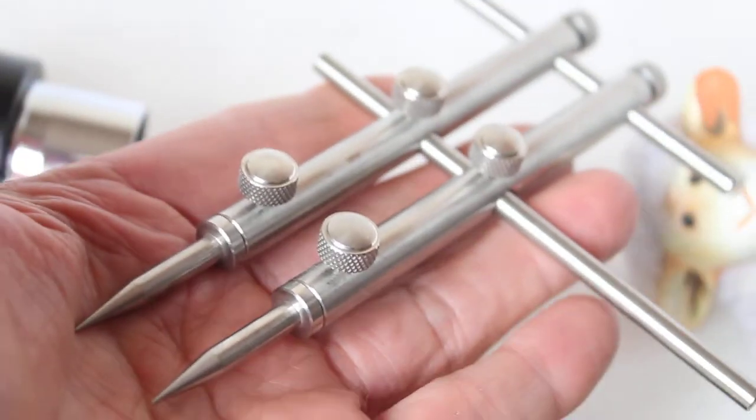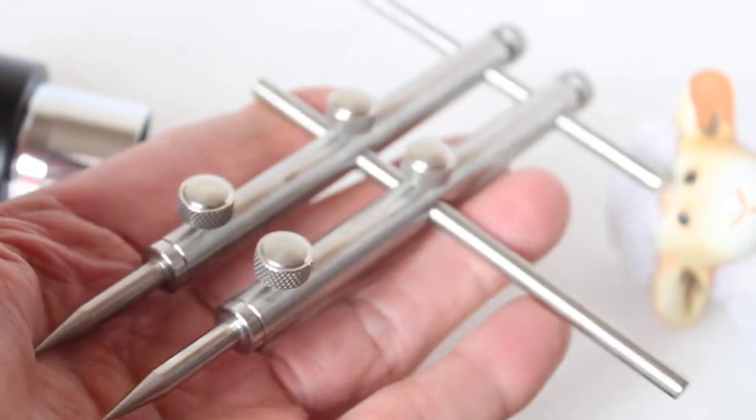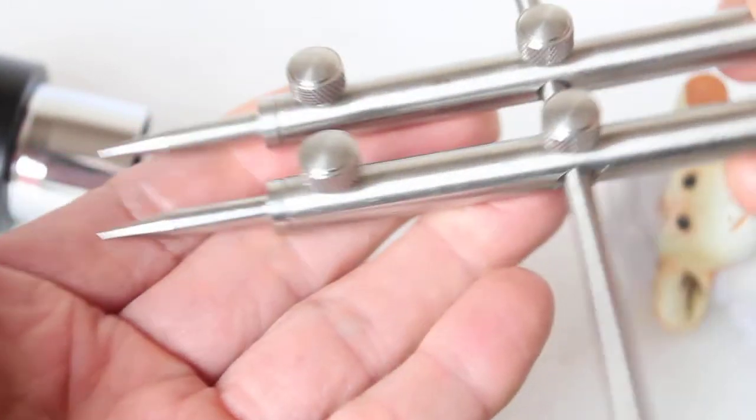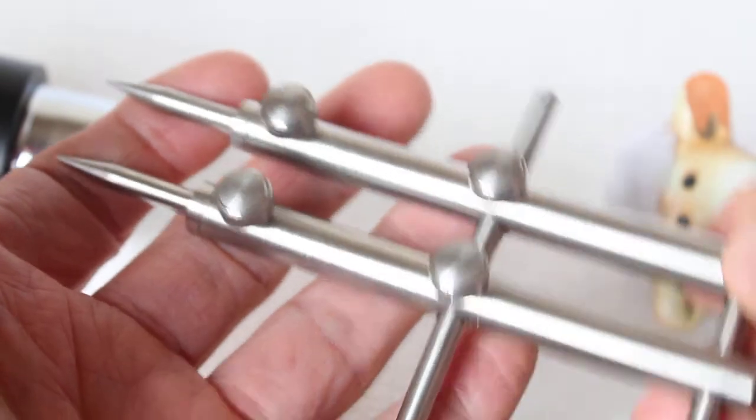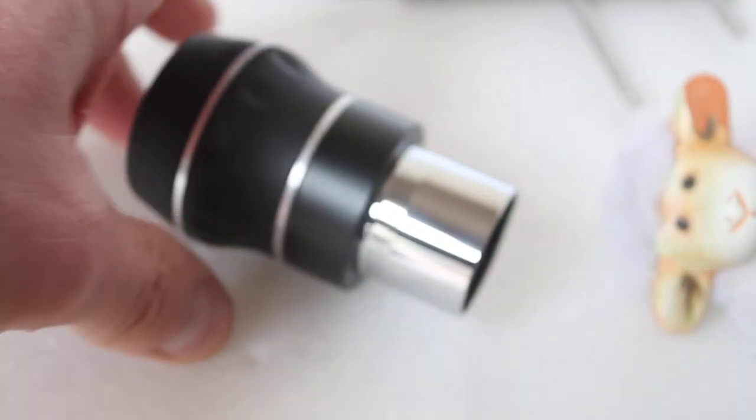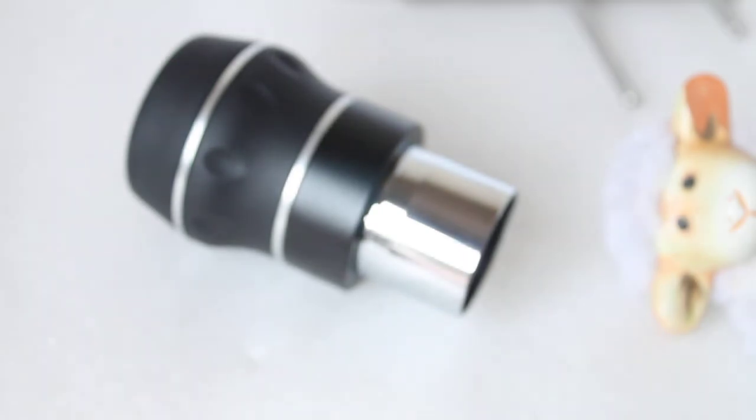Just to show you again, these are those wrenches that you can buy from eBay. I think they're around 10 or 15 pounds, but well worth the money if you like to do a lot of maintenance on your eyepieces. I hope that helps. Thank you very much for watching. Please check out the links in the description below.